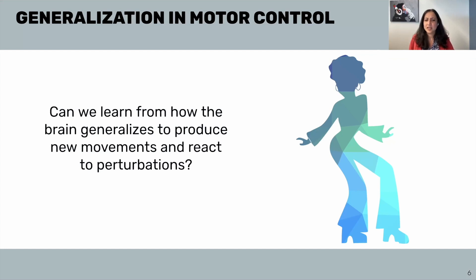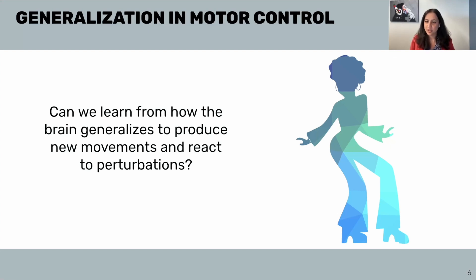Consider what happens as we're learning a new movement. Let's say we're learning a new salsa dance move — it doesn't take us too long, even though the muscle activity that we would need to output is drastically different from other movements that we're more familiar with. If the brain can learn a new movement fairly quickly, can we also learn a generalizable model of how neural activity leads to new movements and how to react to perturbations? Let's dig in.